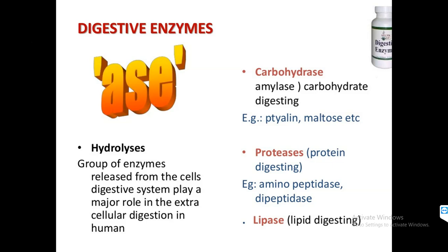Various enzymes are responsible for particular food materials. Amylase, secreted from the buccal cavity or salivary gland, is for the digestion of carbohydrates — examples are starch and maltose. For protein digestion, proteases are used; the term 'hydrolysis' is also used, where 'lysis' means breaking. Examples of proteases are aminopeptidase and dipeptidase. For lipid digestion, lipase enzymes are used.